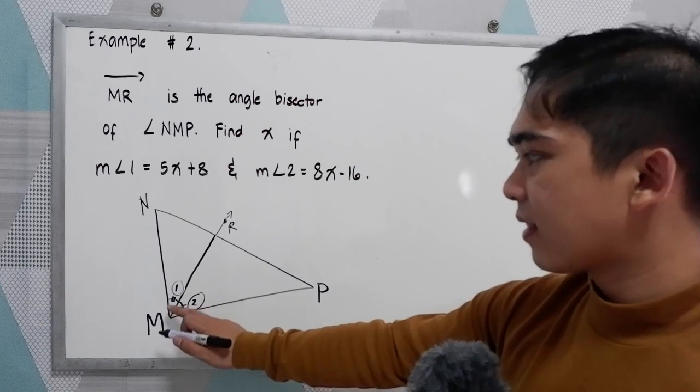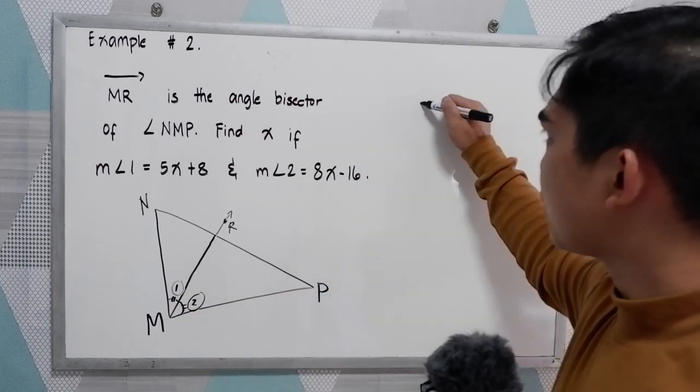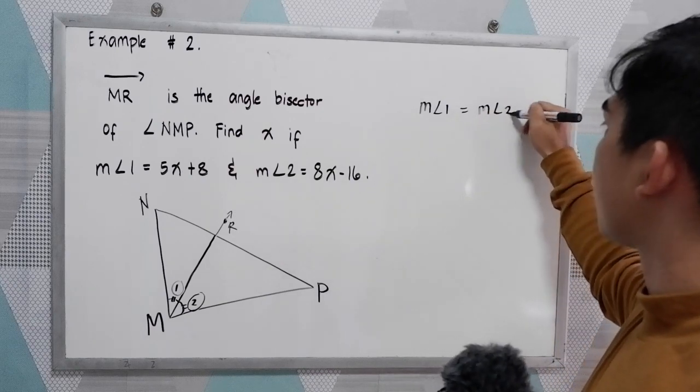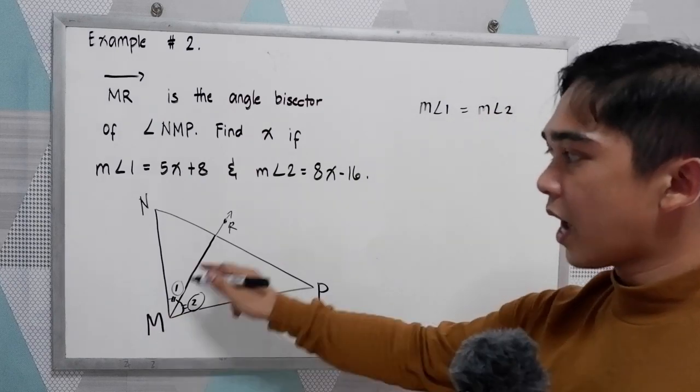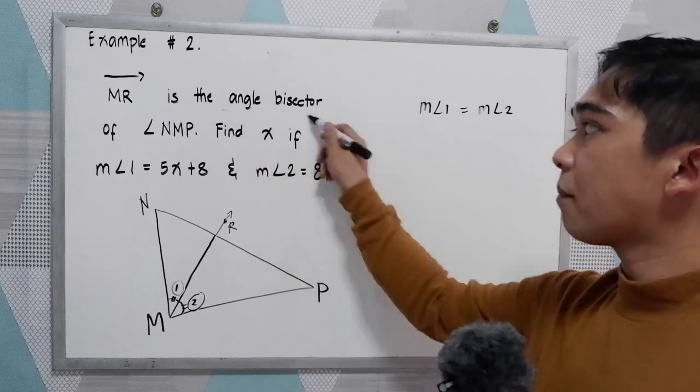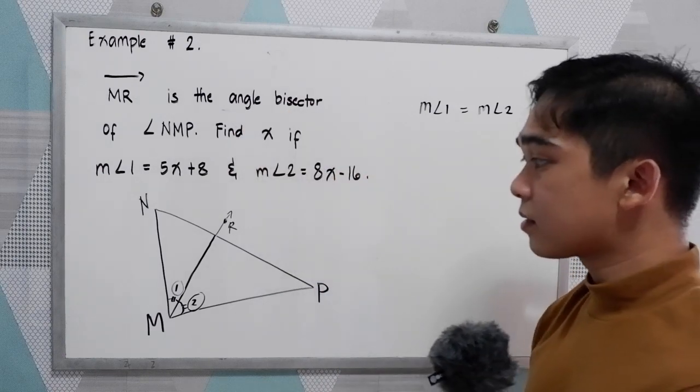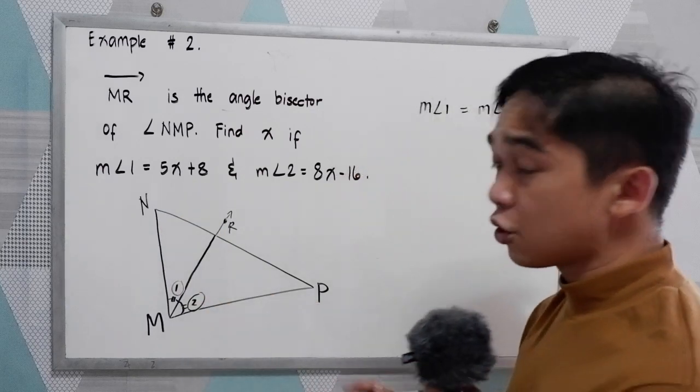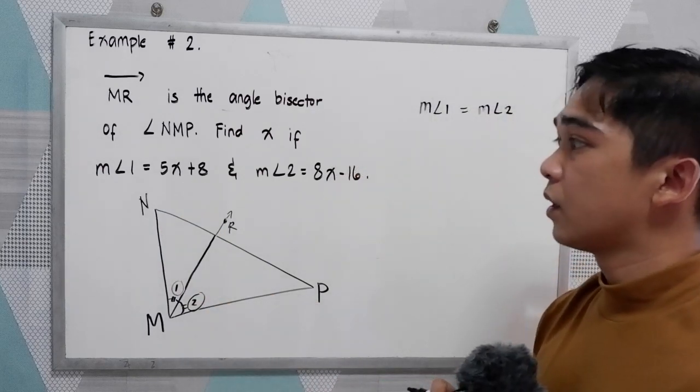We can say that measure angle 1 is equal to the measure of angle 2, because ray MR is our angle bisector. That means this ray divides angle NMP into two equal parts.